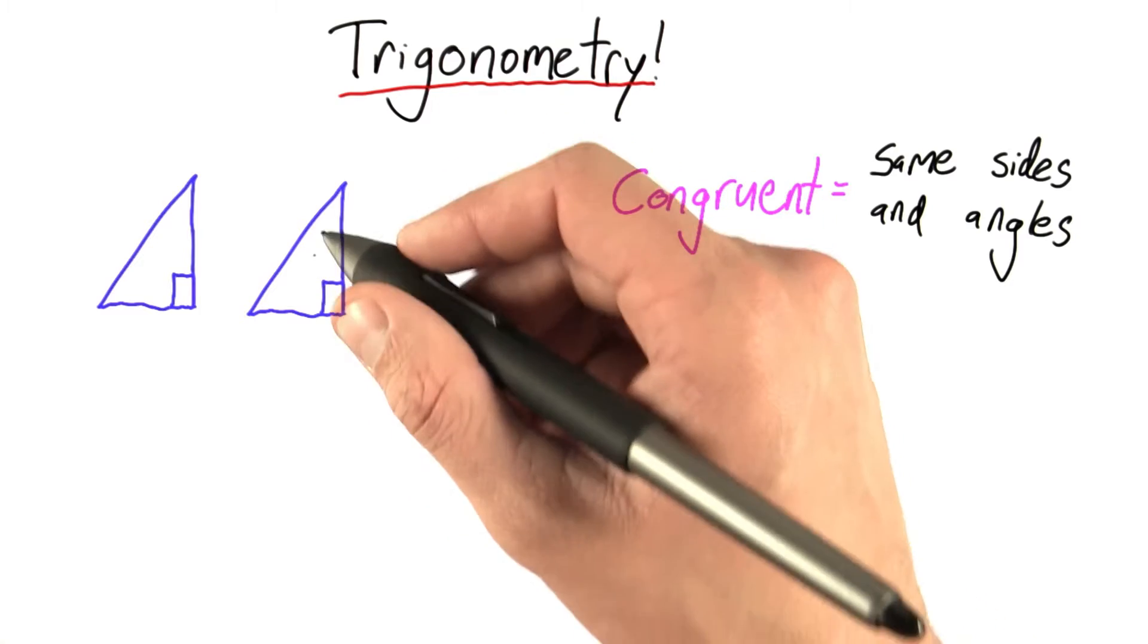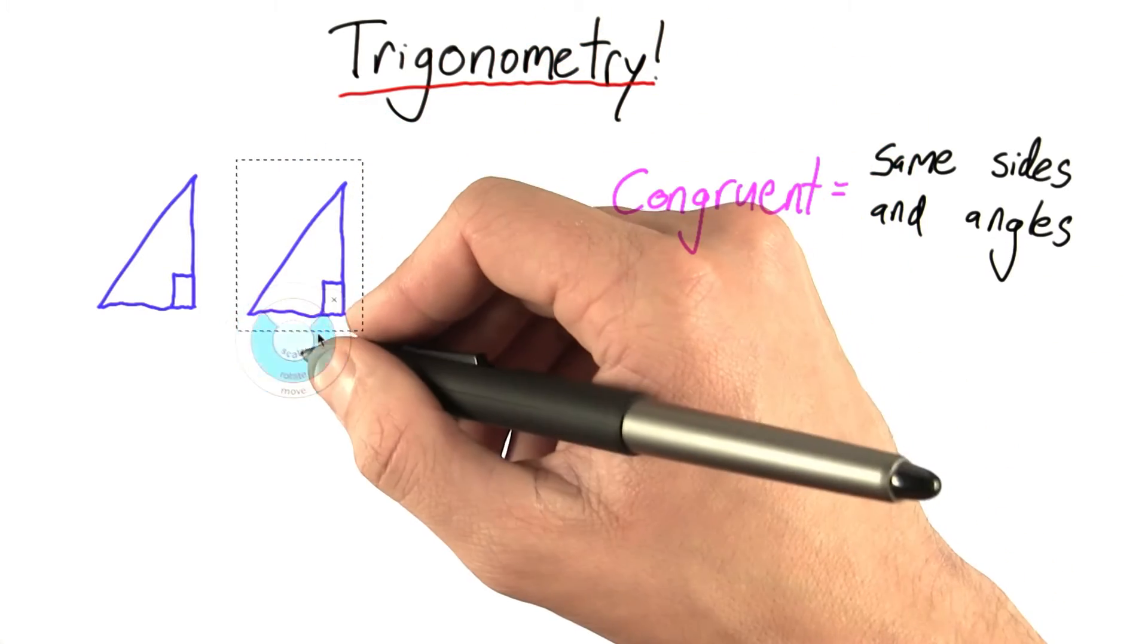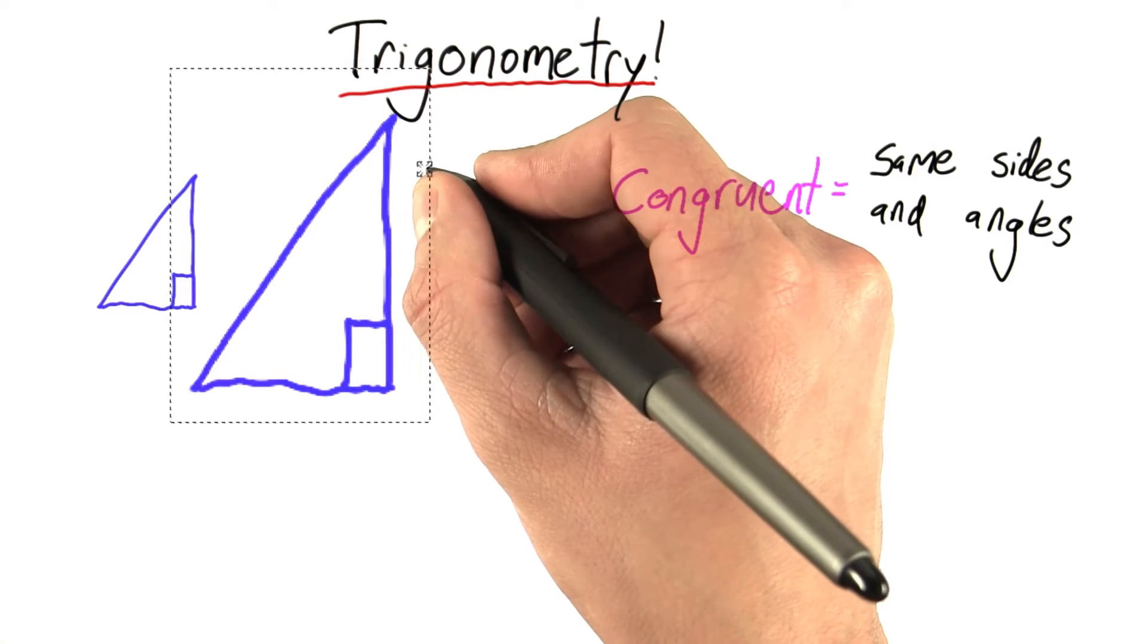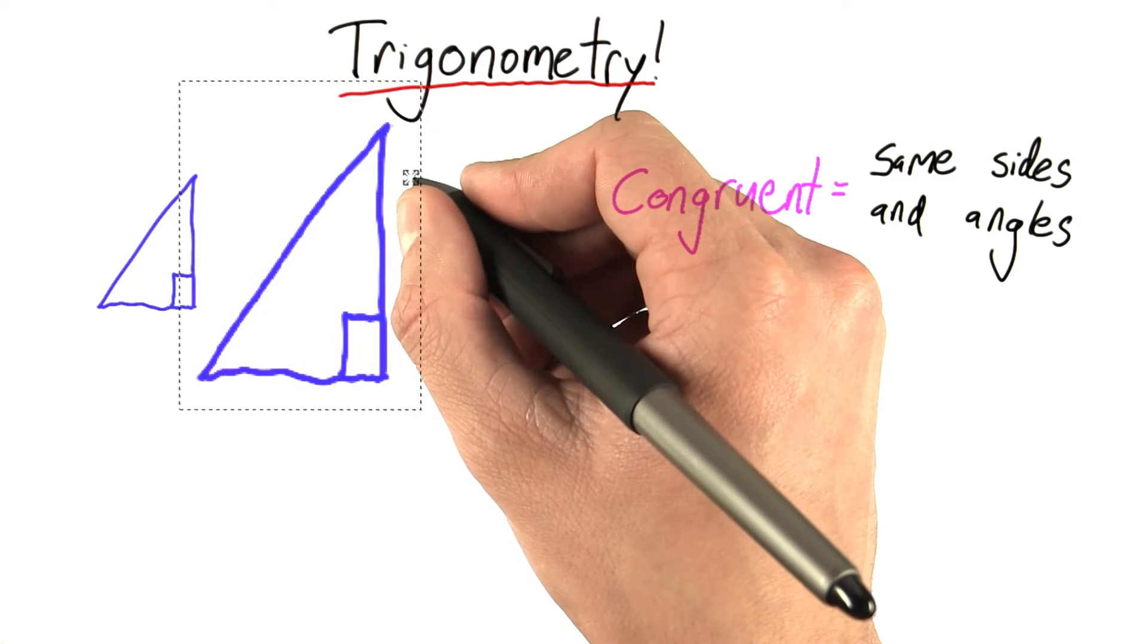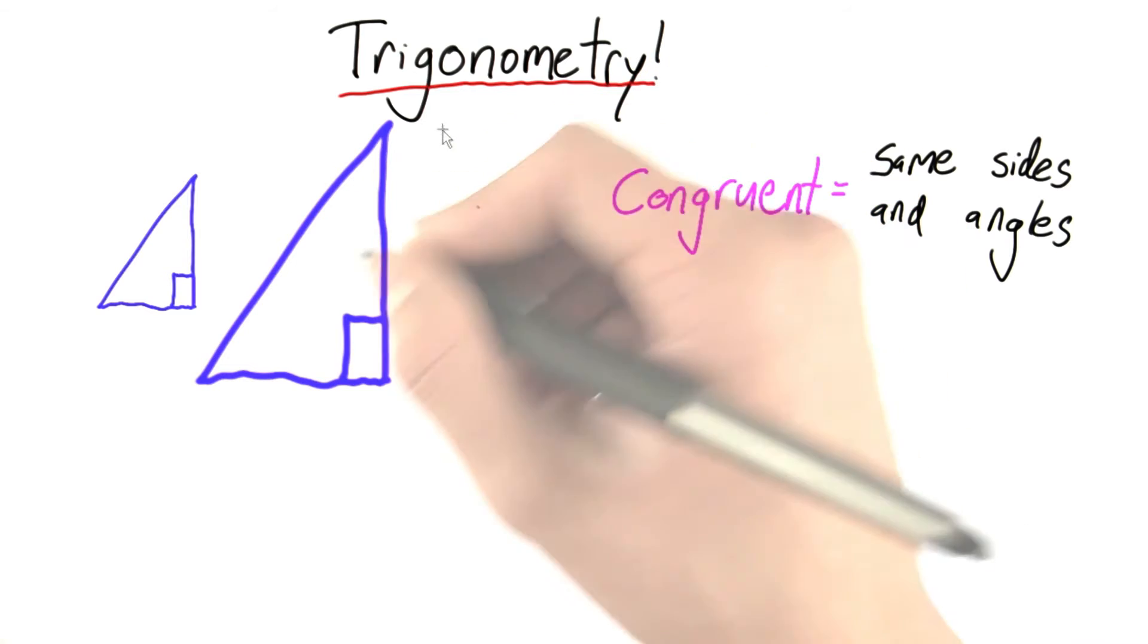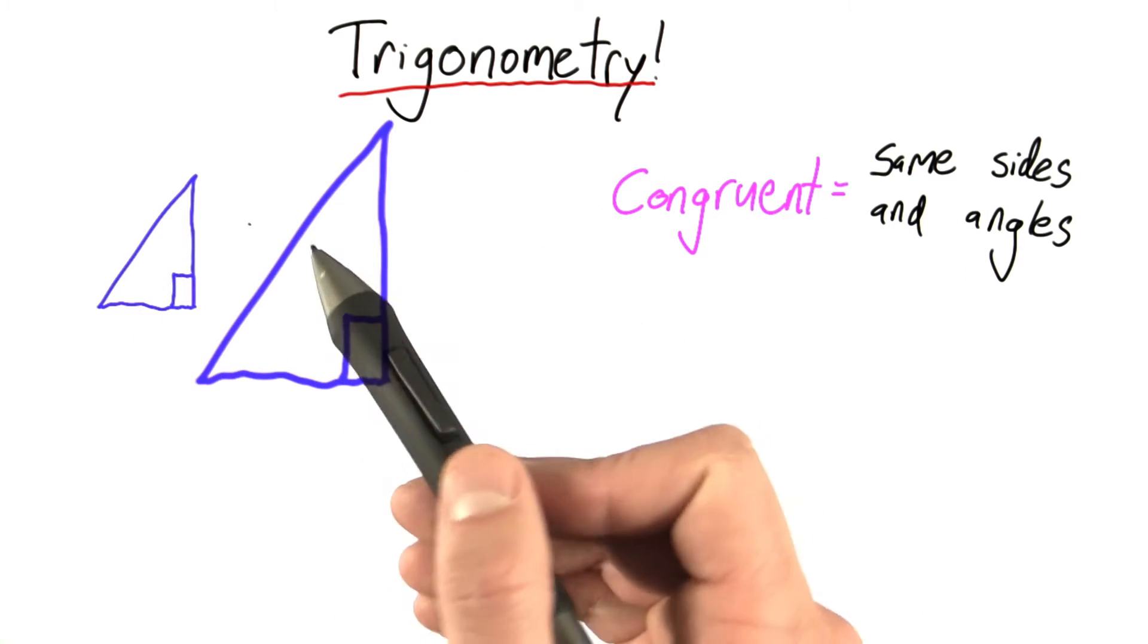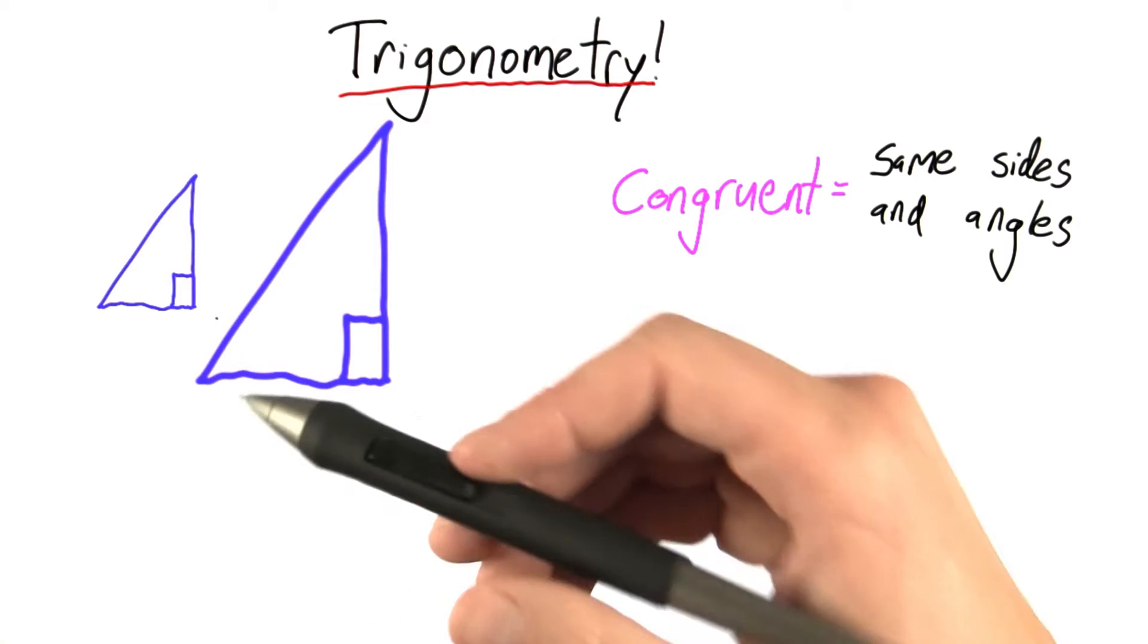What if this triangle were a little bigger? What if I were to expand it proportionally? So, as it grows, it grows the same way in each direction. Same amount in each direction. Well, clearly this is not identical to this triangle. These two are not congruent. But they are similar in some way.